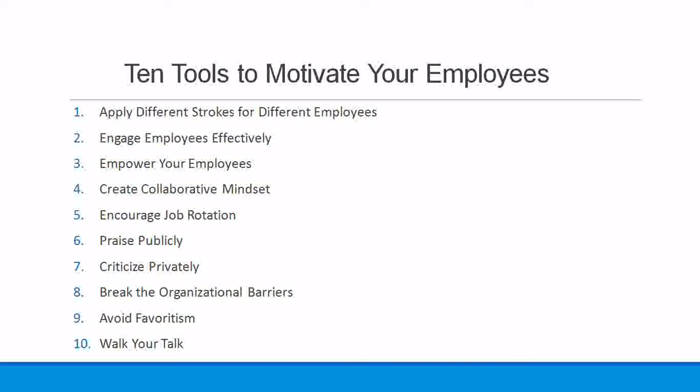Tool number seven: criticize privately. Call the underperforming employees privately to your cabin and provide sandwich feedback. Sandwich feedback starts with a positive compliment, follows with comments for correction of behavior, and concludes with a positive compliment. It sounds good for the receiver and paves the way for better behavior.